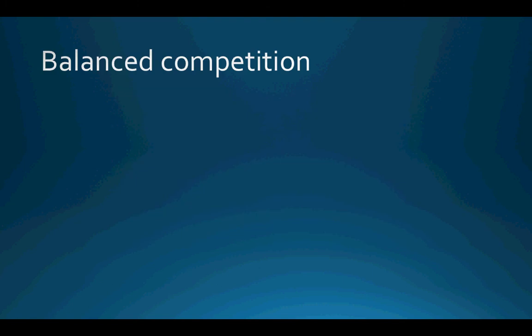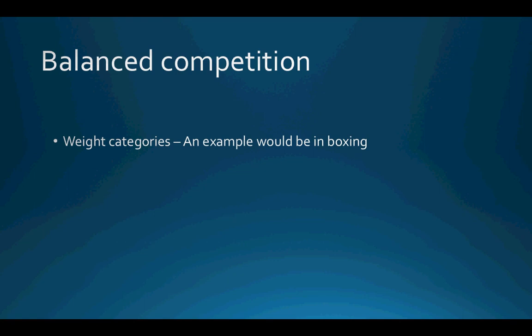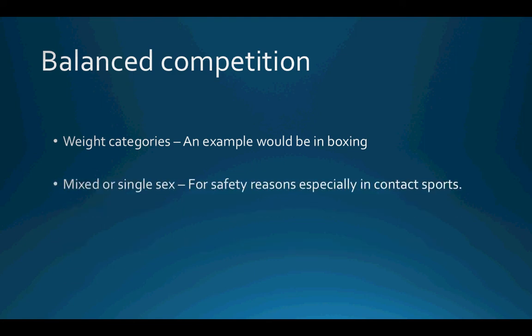Another way to ensure risks are minimised is to have balanced competition. When creating a balanced and fair competition, certain factors need to be considered. The first is weight categories. In sports such as boxing, competitors are matched according to their weight as well as their ability — this is necessary to protect participants' safety. A 7-foot, 20-stone professional boxer obviously can't safely take on a boxer who is 5 foot tall and weighs 8 stone. Weightlifting is divided into weight divisions to equalise competition. Karate and judo have clearly defined skill levels where players take part according to their ability.